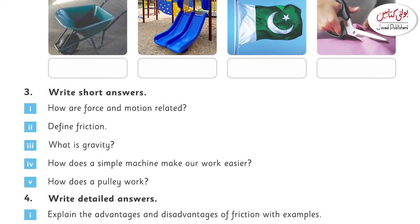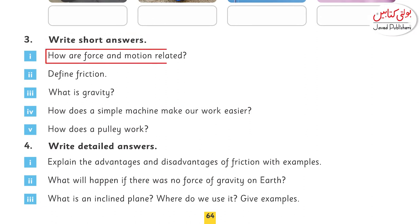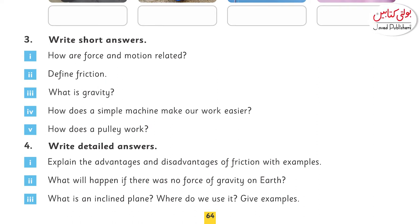Question number 3, short questions. First: how are force and motion related? Force aur motion ek dusre se kaise relate karte hain? The answer is: the relationship between force and motion is that force affects the state of motion — it can cause it to stop. Question number 2: define friction. It is a force that stops or tends to stop a moving object — aisi force jo kisi bhi cheez ko roke ya rokne ki salahiyat rakhti ho.